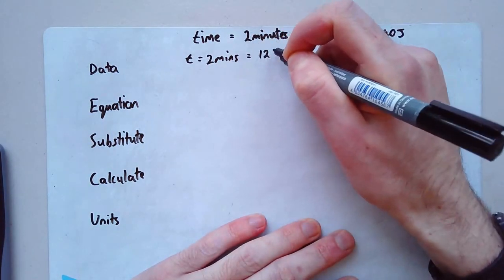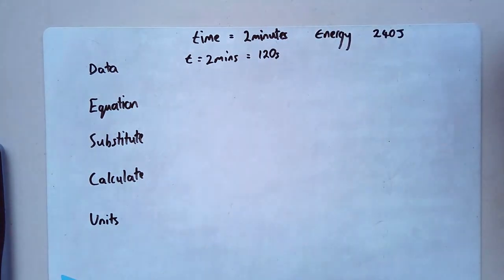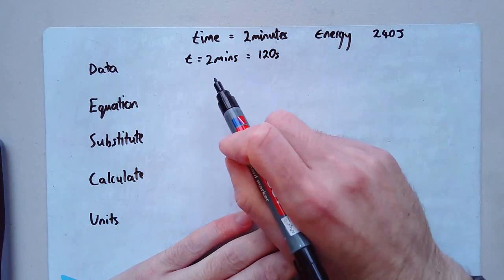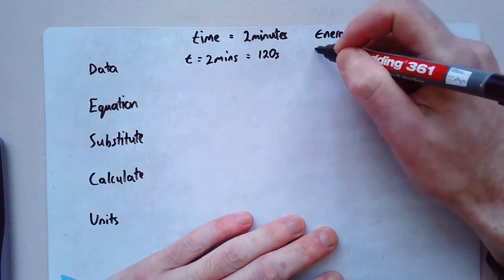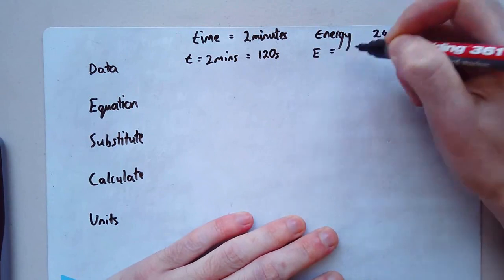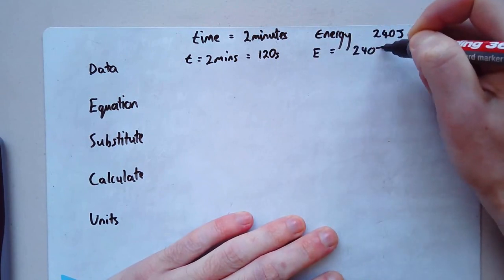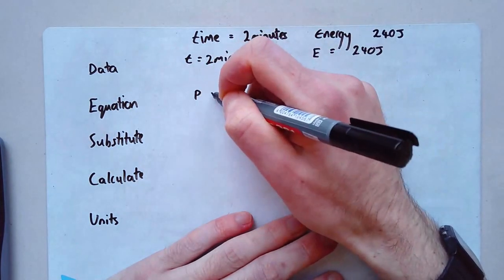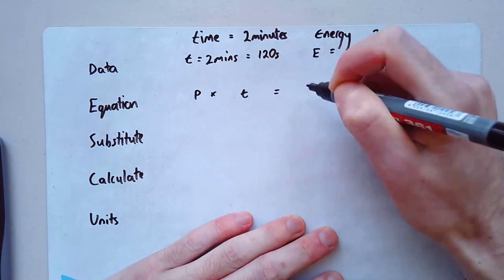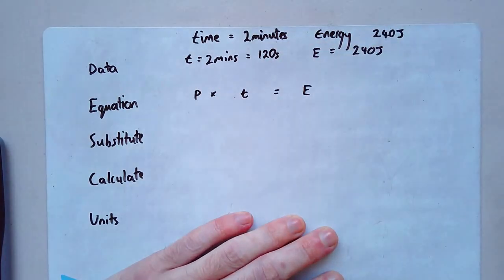This is not a video about how to explain how to change units over. I'll try and do that in a different video. But for the minute, I'm going to assume that you know that you just need to times that by 60 to get seconds. And my energy equals 240 joules. Now again, I need to write an equation. Which equation do I write? The one that I know. P times t equals E. That's the one that I know. That's the one I'm going to write down. My substitute step here. P I don't have. So I'm just going to write P.